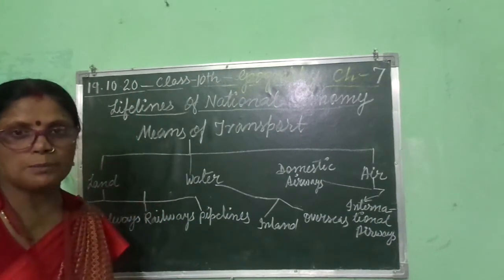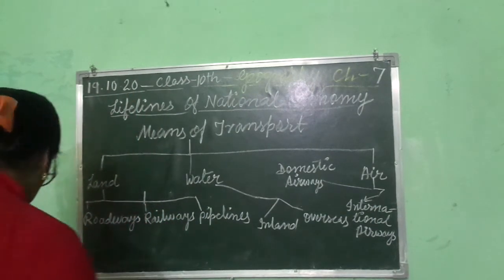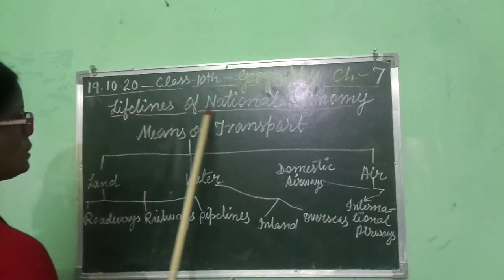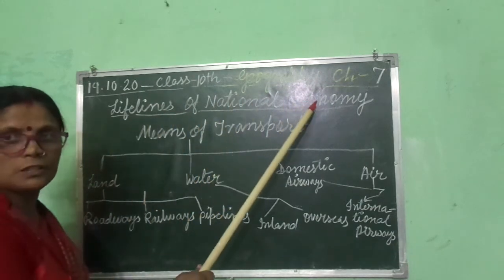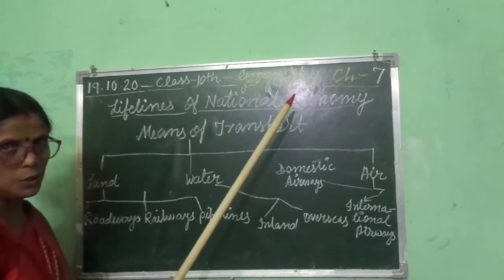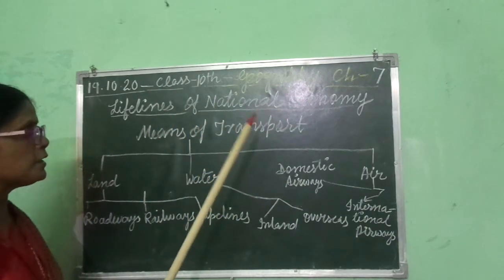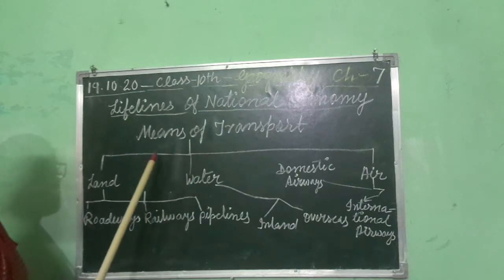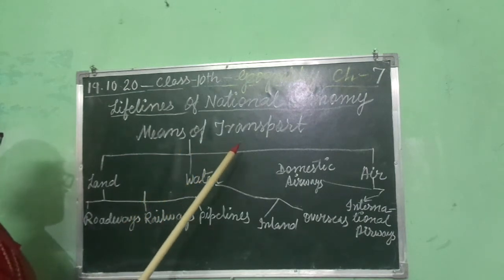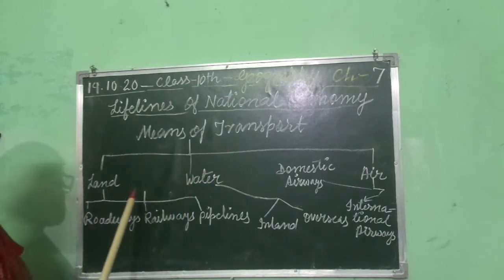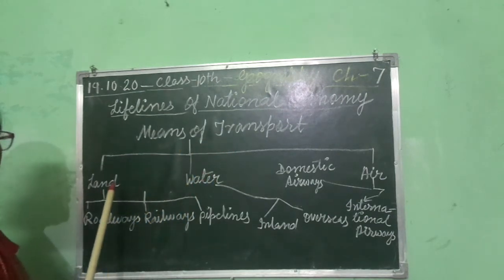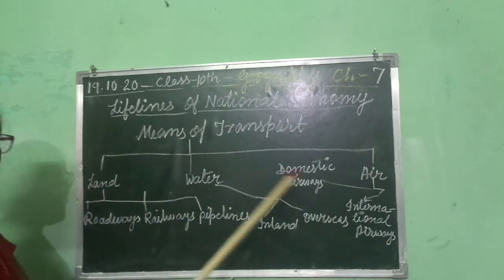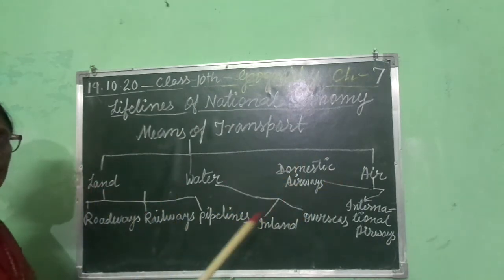The name of the chapter is 'Lifelines of National Economy.' In this chapter, we will discuss about the means of transport. You know the three means of transport — that is, land, water, and air.